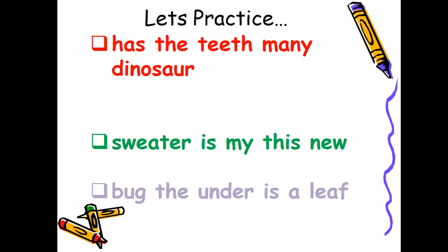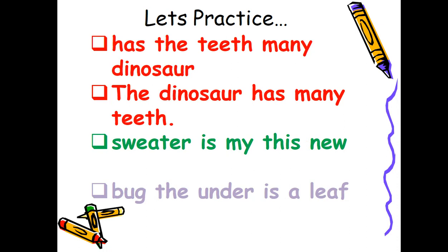Let's practice with these given examples. Earlier we read some groups of words. Let's read: 'has the teeth many dinosaur.' This is not making a complete meaning. Let's make a sentence with these words. Can you make one? Yes — 'The dinosaur has many teeth.' Now this is a sentence, starting with a capital letter and ending with a full stop.